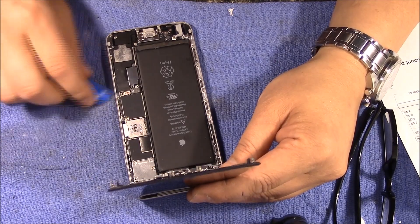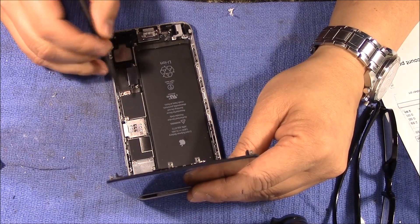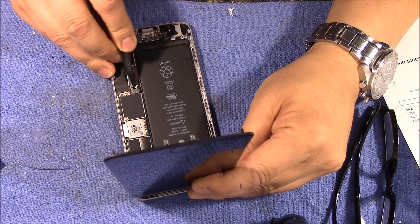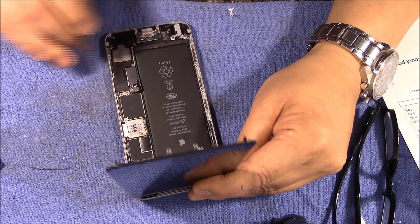And then you can take a little spudger tool or something like that and just pry it up on the power cable here. So there we go. So the power is disconnected.